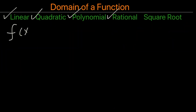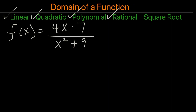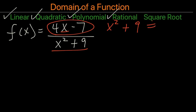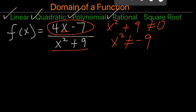Here's another rational function. We can apply any value into x in the numerator, so we pay attention to the denominator: x squared plus 9 cannot be 0. If we solve for this, we get x cannot be negative 9. But when you square a number, you always get a positive number, not a negative. So x squared can never be negative 9.